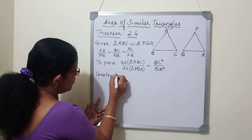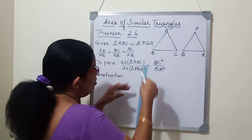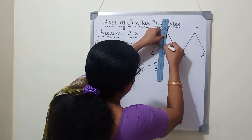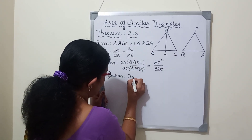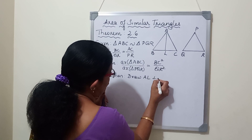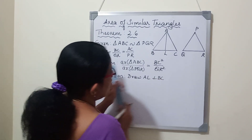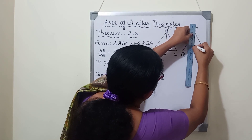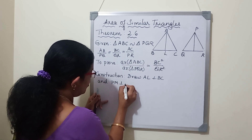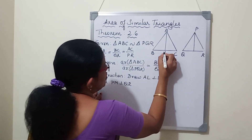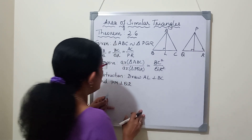Construction: draw a perpendicular AL to BC. So AL is perpendicular to BC and PM is perpendicular to QR.